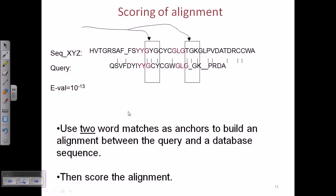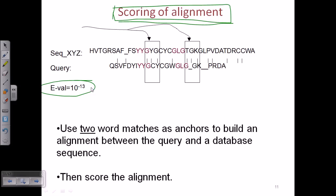We elongate the match in both directions until we have a suitable amount of matches, then we score the alignment. Scoring tells us whether the alignment is good or not. We get the E value as well as the Z score — the lower the E value, the better the alignment. If the E value is less than 10 to the power minus 6, that is statistically the best. Here, an E value of 10 to the power minus 13 is far better.